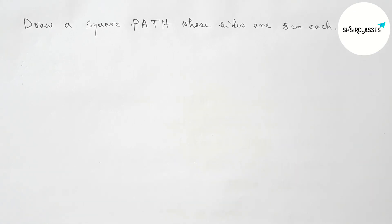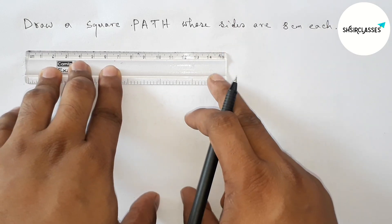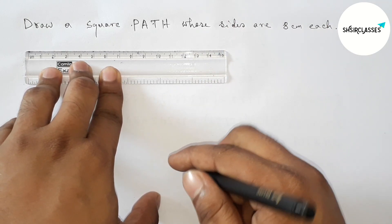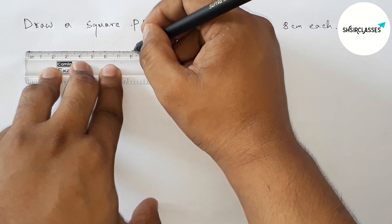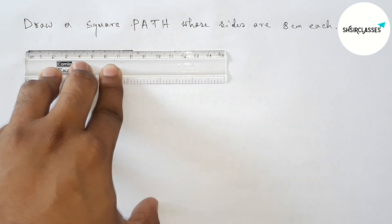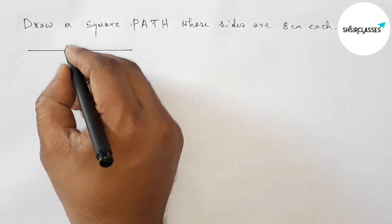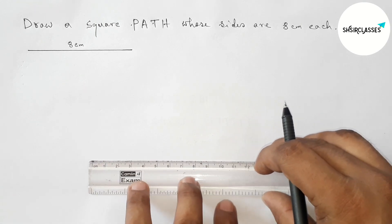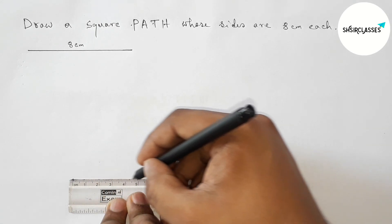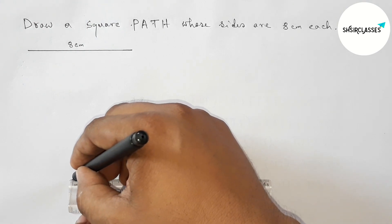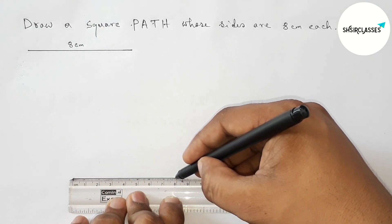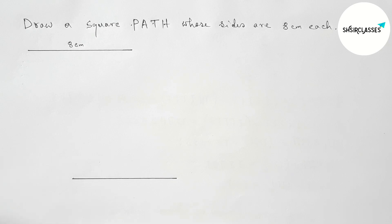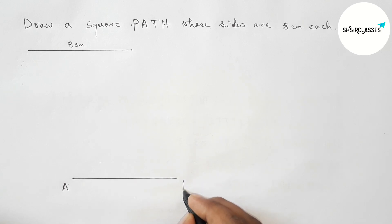First of all, drawing a line segment of length 8 centimeters with the help of a scale. This is the 8 centimeter line segment. Next, drawing another line segment of length 8 centimeters with the help of a scale. Labeling the endpoints — this point is A and this is T, so AT equals 8 centimeters.